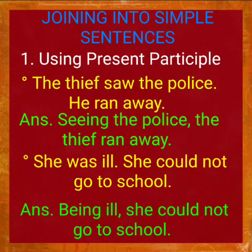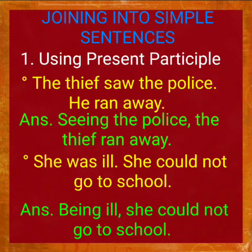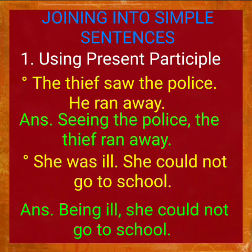Next example: 'She was ill. She couldn't go to school.' The answer will be: 'Being ill, she couldn't go to school.' Here, the present participial form of 'was' is 'be plus -ing' — being. Being ill, she couldn't go to school. The main verb is 'couldn't go.'